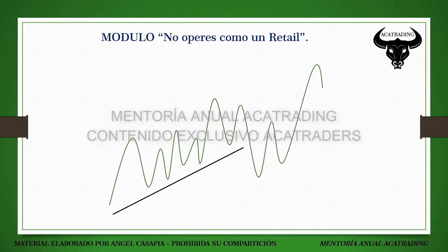Nosotros vamos a neutralizar esa liquidez y el take profit básico estaría por debajo o en el mismo nivel del mínimo más cercano. Un take profit más generoso para nosotros estaría entre 10 a 20 pips por debajo de la neutralización de ese mínimo, siempre y cuando el flujo de órdenes sea alcista, porque el precio o IPDA va a neutralizar de 10 a 20 pips ese mínimo y luego va a revertir. Inclusive si son mínimos diarios anteriores pueden llegar a ser hasta 30 pips.